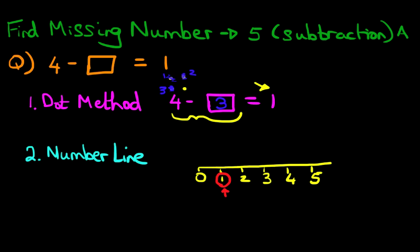What number are we starting from? Well, the question tells us it's 4. 4 minus something equals 1, so we're starting at 4. So let's start from number 4 here. There we go, we've got a nice big dot there at 4.